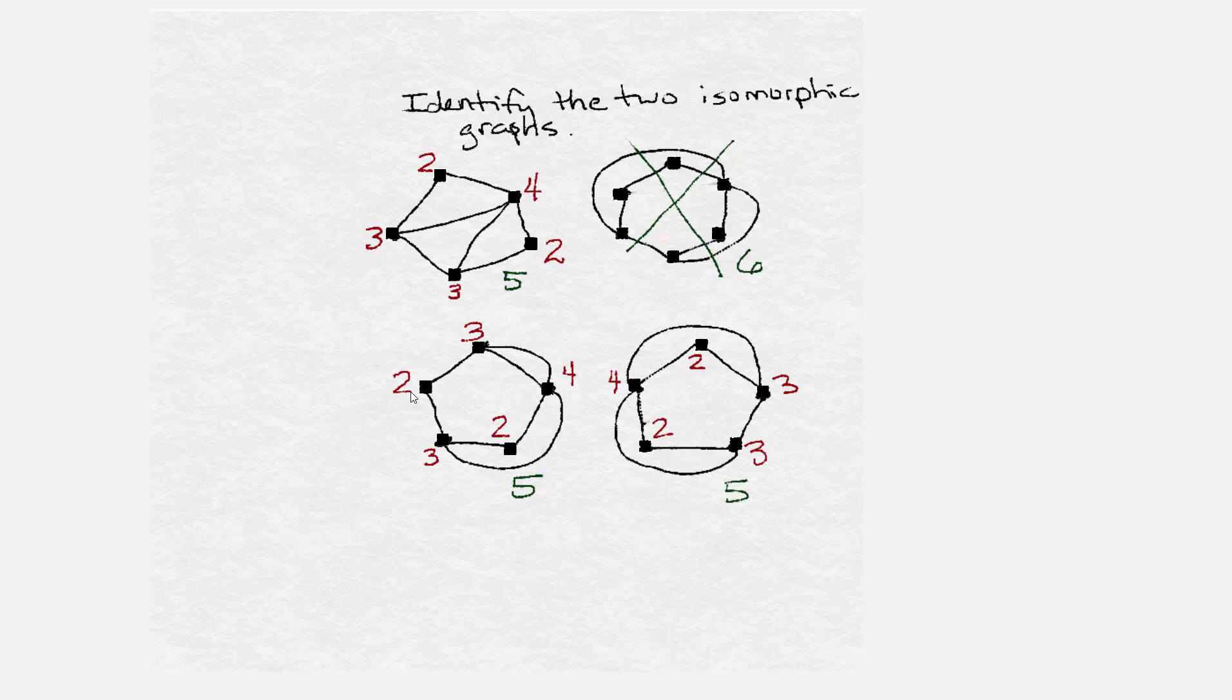So how can we decide which pair is actually isomorphic? Let's make some observations.